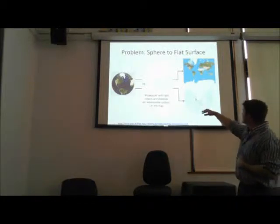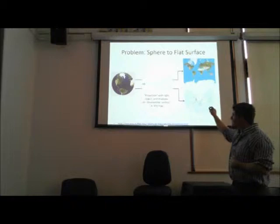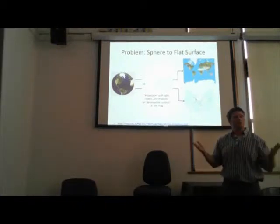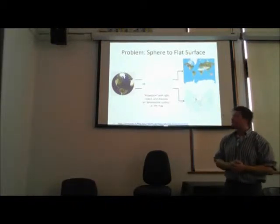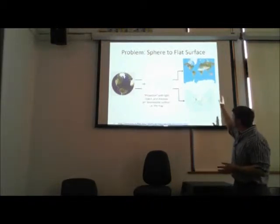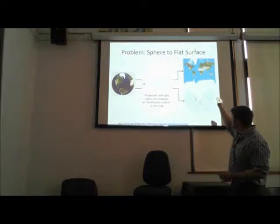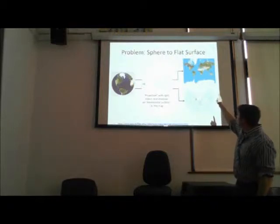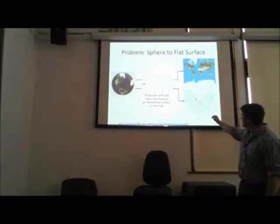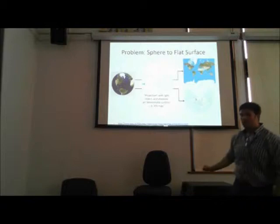Using this method, we can get a variety of different maps that have continuous surfaces, at least within the borders of the map. On top, that's a Mercator projection. And on the bottom, a conic projection.